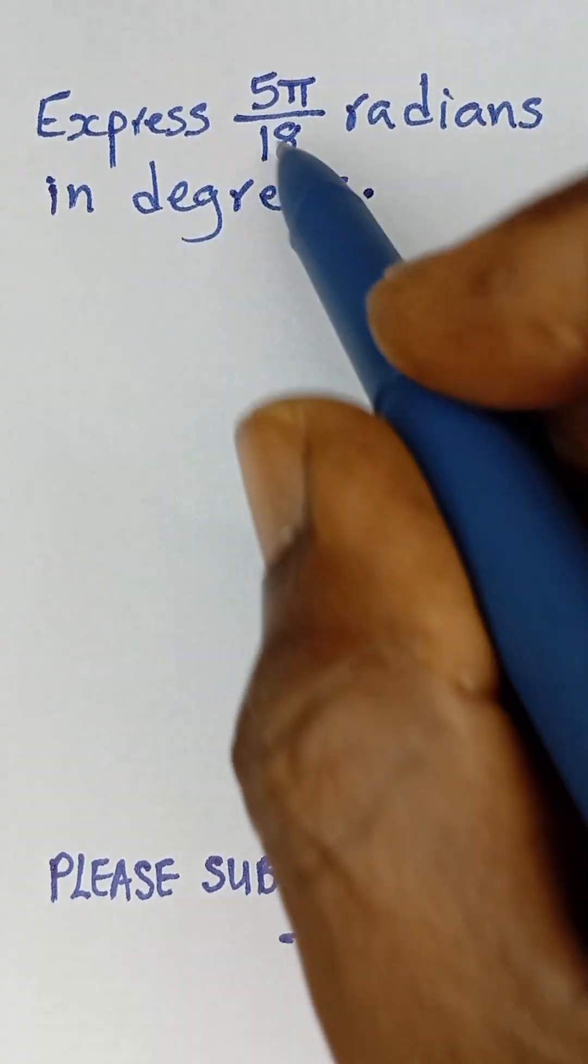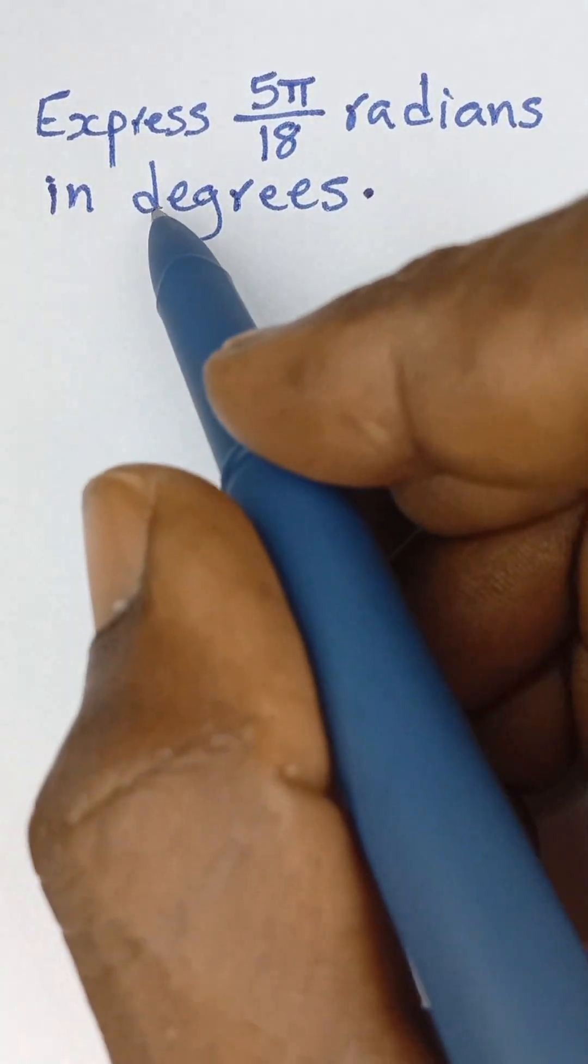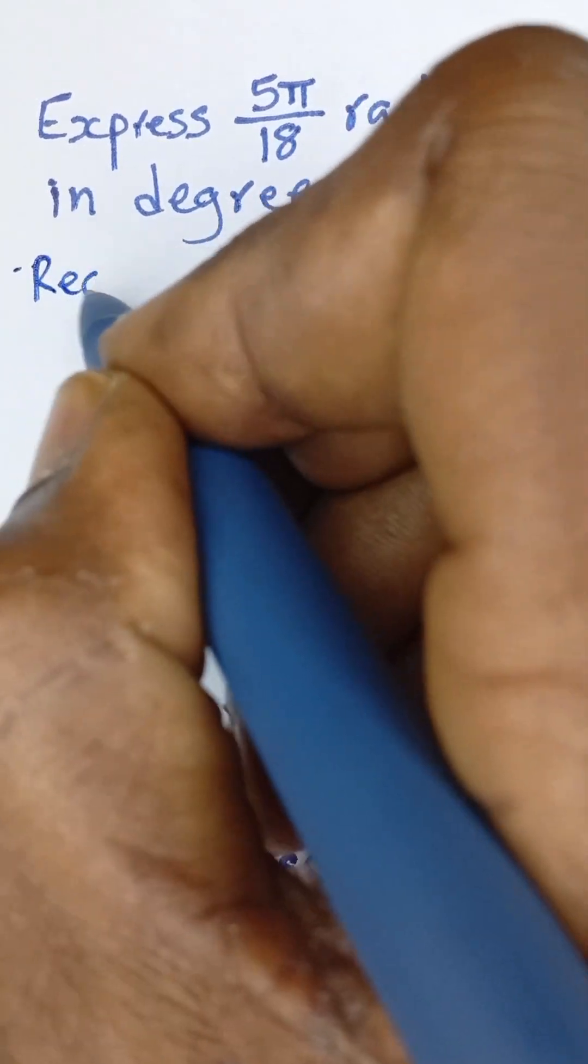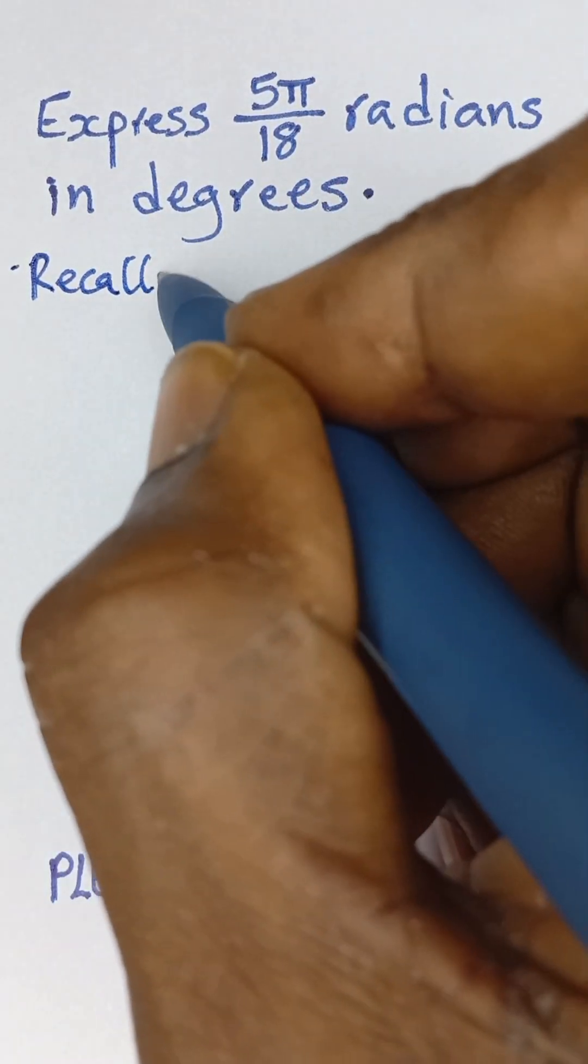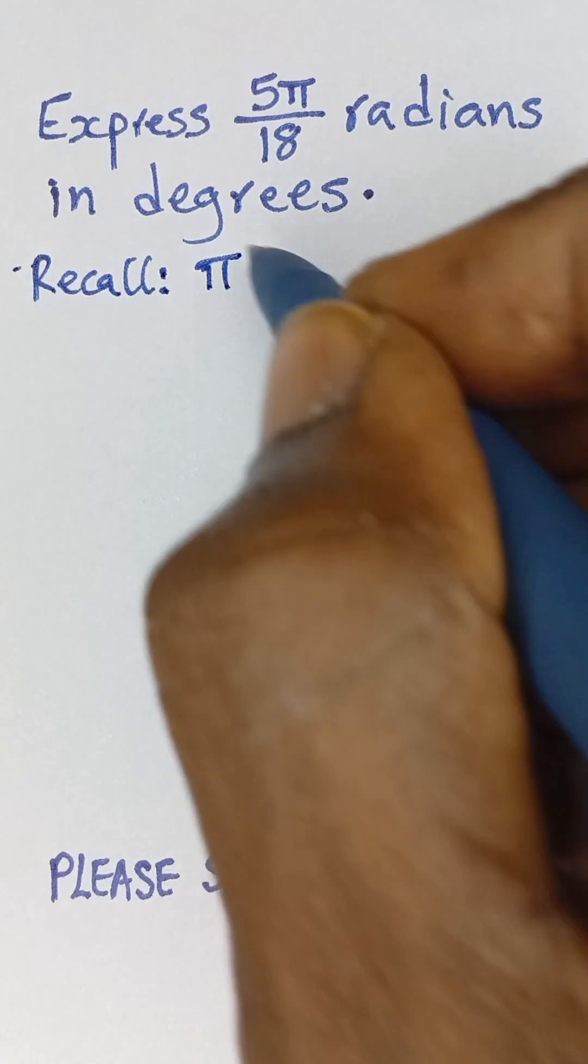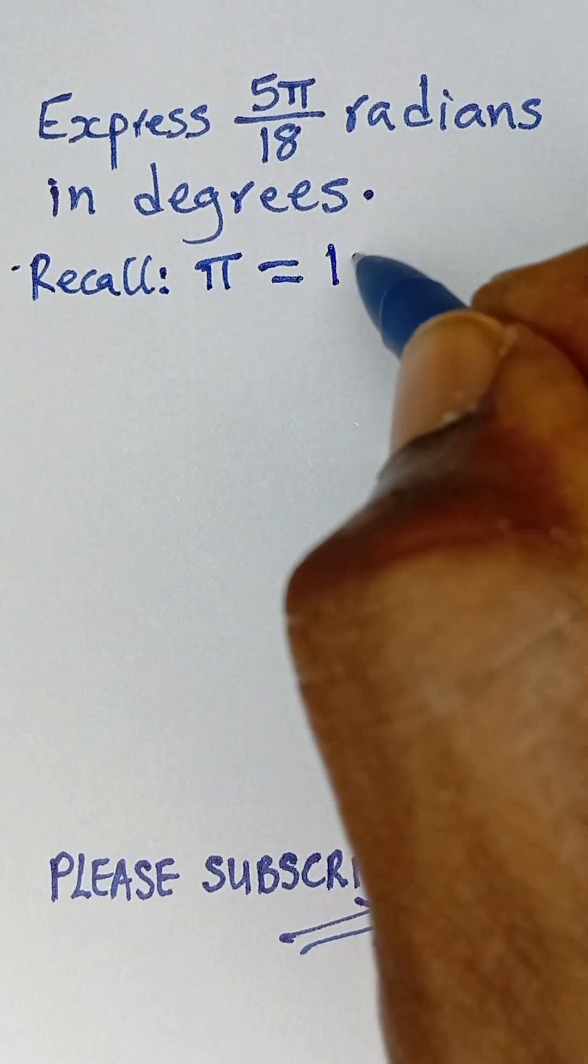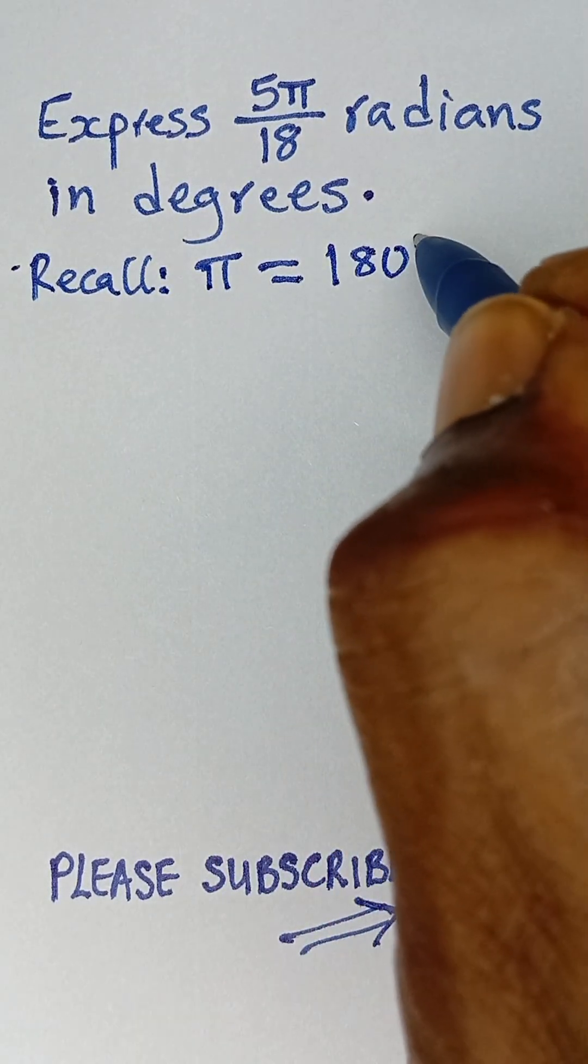Express 5π over 18 radians in degrees. Recall that π radians is equal to 180 degrees.